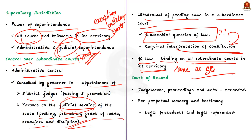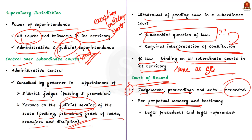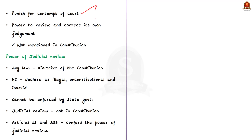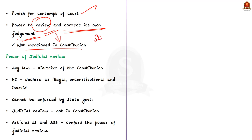As a court of record, a High Court has two powers. First, the judgments, proceedings, and acts of the High Court are recorded for perpetual memory and testimony — these records have evidentiary value, cannot be questioned before any subordinate court, and are recognized as legal precedents and legal references. Additionally, it has the power to punish for contempt of court. As a court of record, a High Court also has the power to review and correct its own judgment or order or decision.